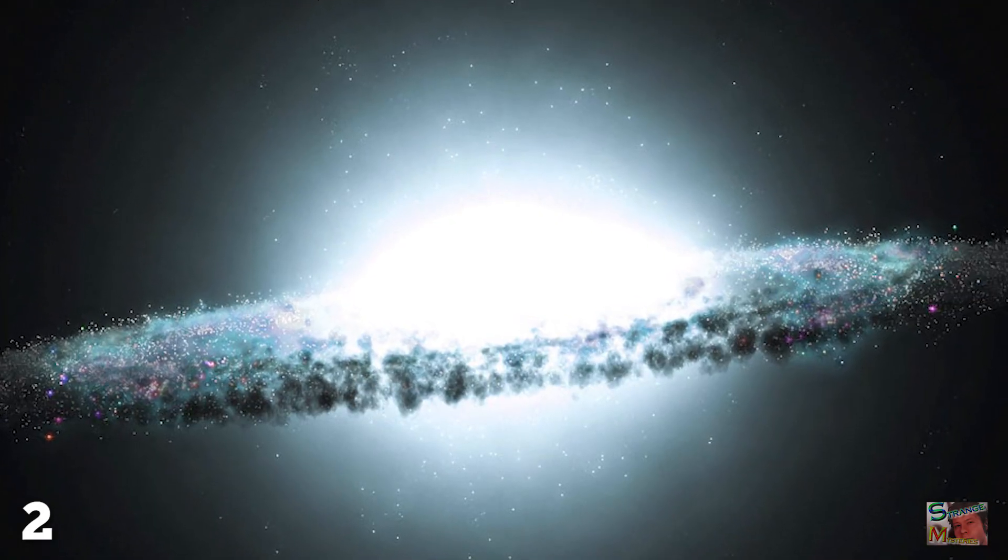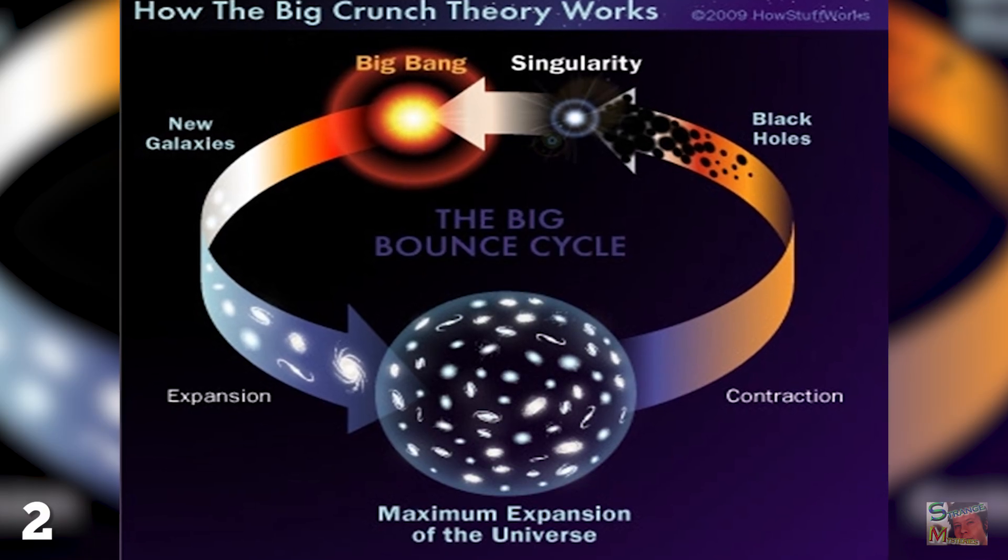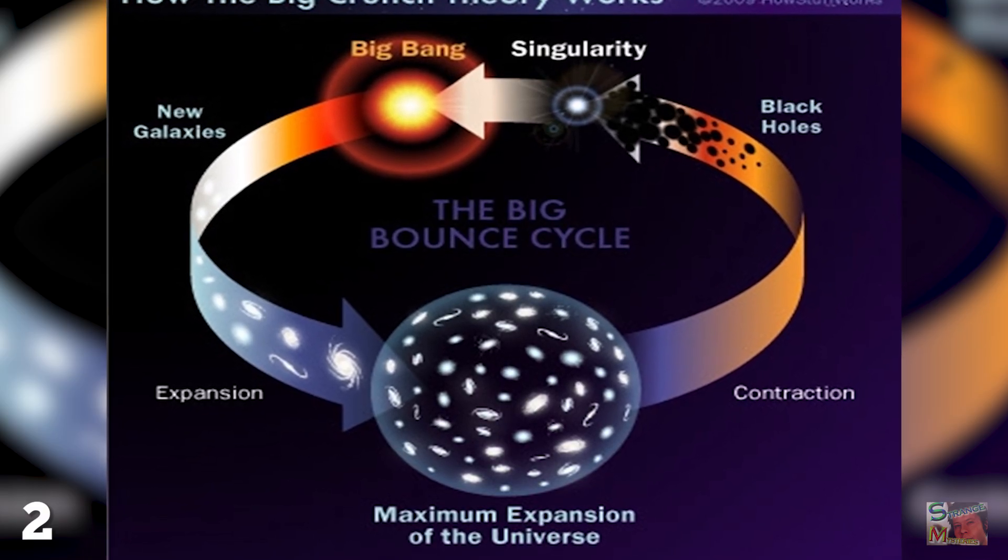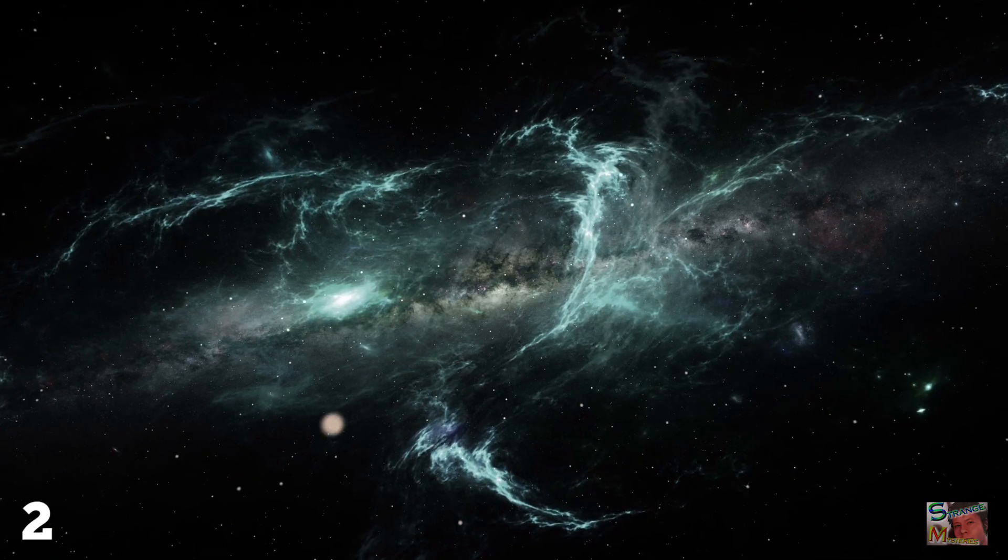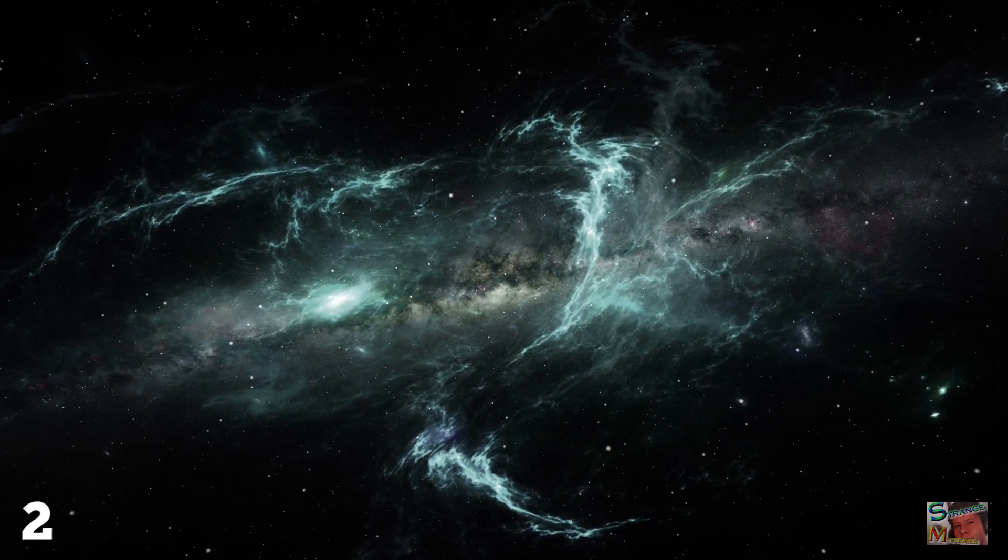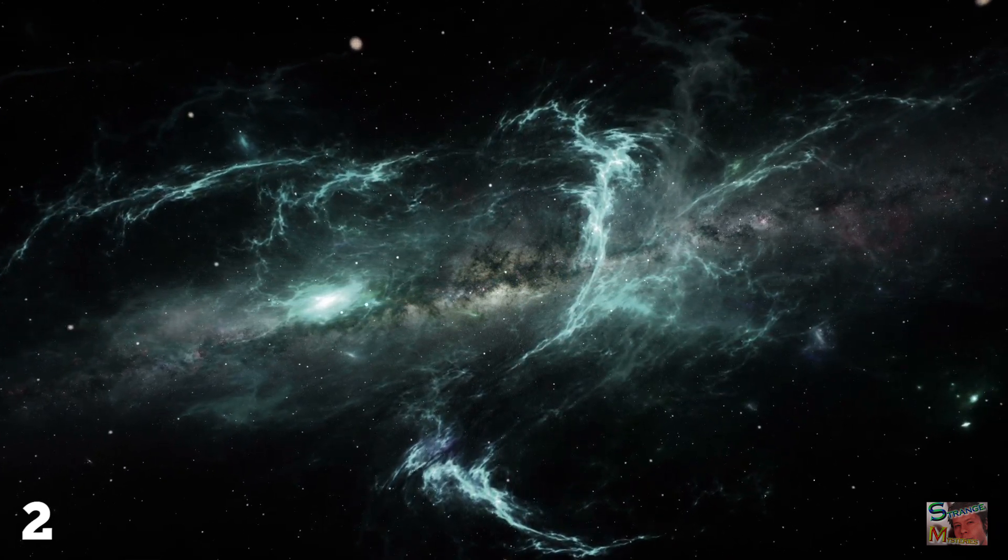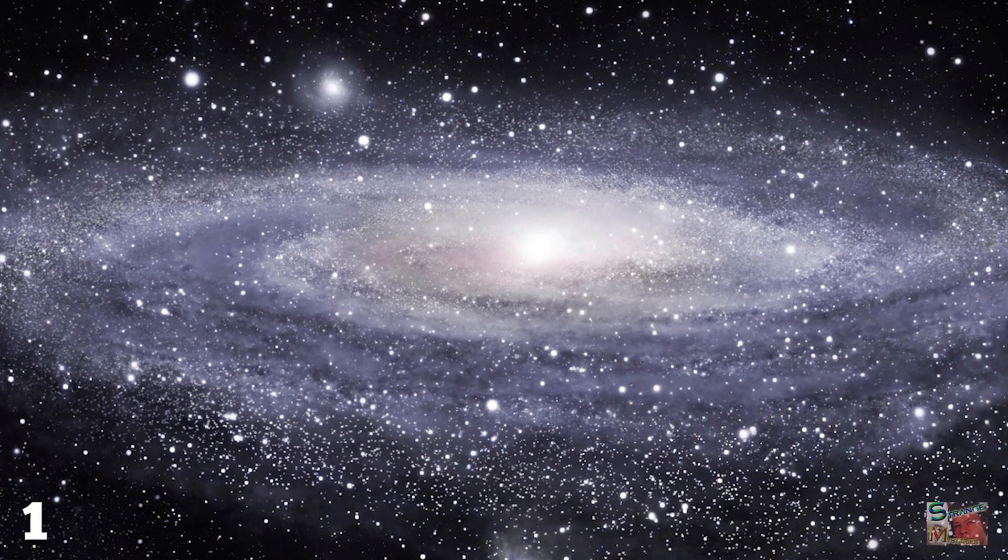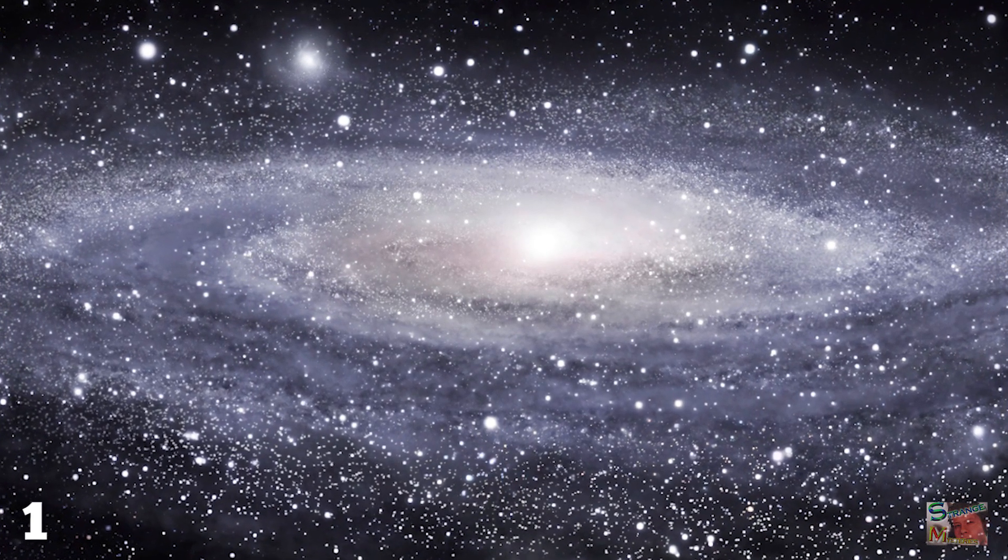One theory says that this Big Crunch scenario would lead to another Big Bang, and that this cycle of expansion and contraction has occurred repeatedly for infinite time. So not only might the universe have no center, but time itself may also be infinite in both directions as well. And at number one: the Milky Way.